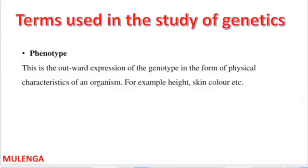Let us now look at phenotype. Phenotype is the outward appearance of an organism, or the physical appearance of an organism. Examples include height and skin color. The outward expression of the genotype in the form of the physical characteristics of an organism is called the phenotype.